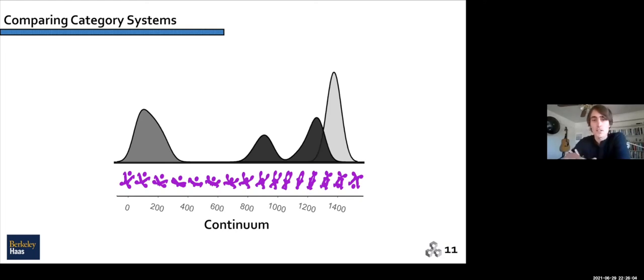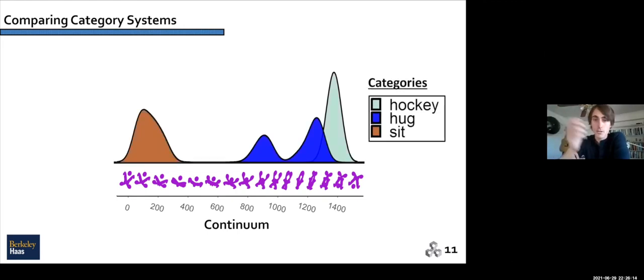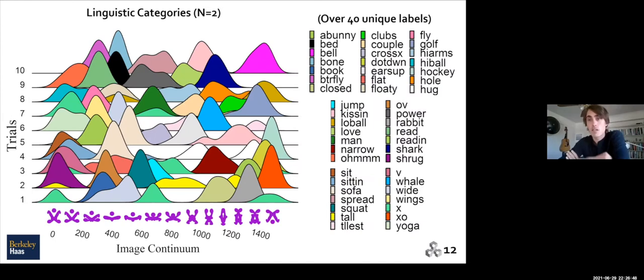The horizontal axis is the continuum of shapes that they categorize. The distributions are which shapes they group together under a common label, and then the color is going to be the label that they use. So on the far right here, you see the label hockey, you can see it kind of looks like hockey sticks and a puck. And then you can see the empty spaces is actually a sense where they didn't create a category. So this is the category system for a particular dyad. What I'm going to do is I'm going to show you these category systems side by side from separate dyads. So here we have the dyads and we can see a ton of variations.